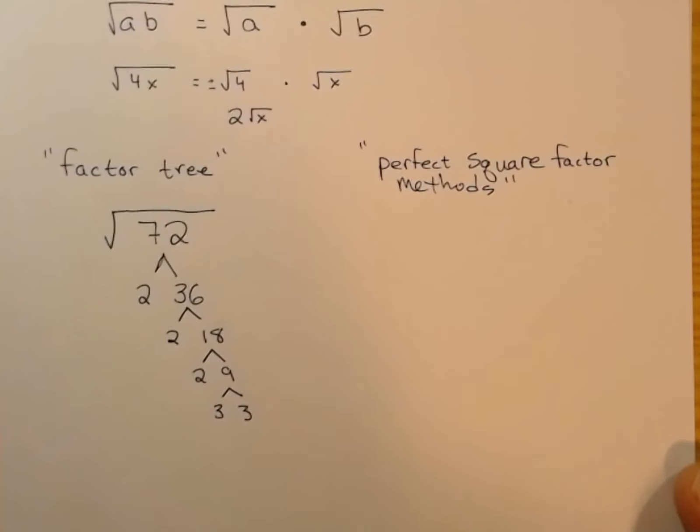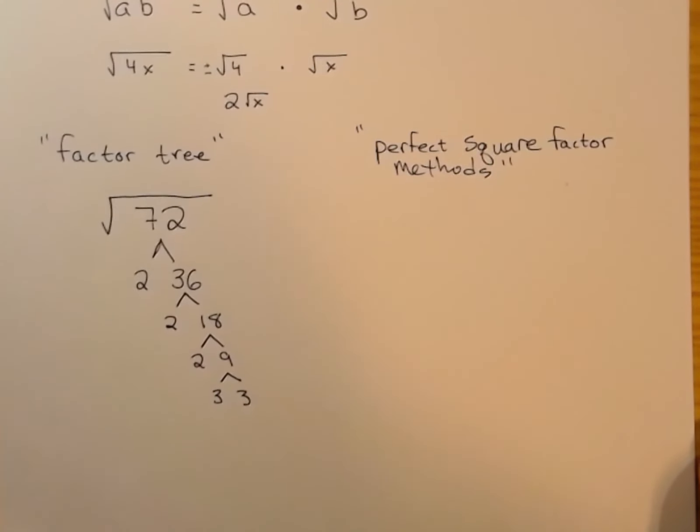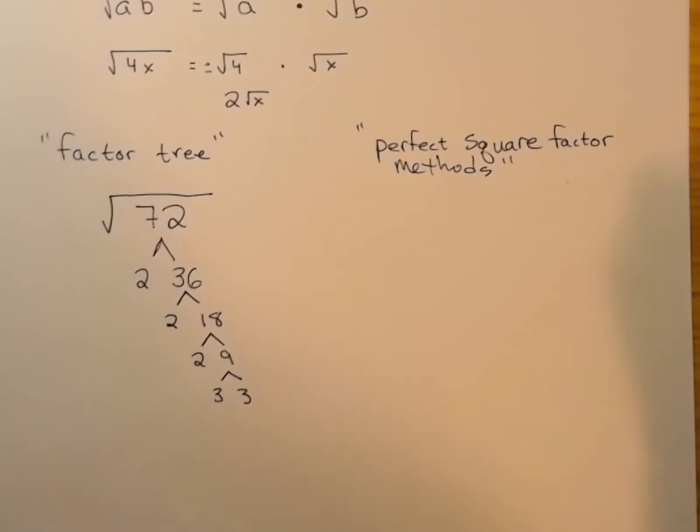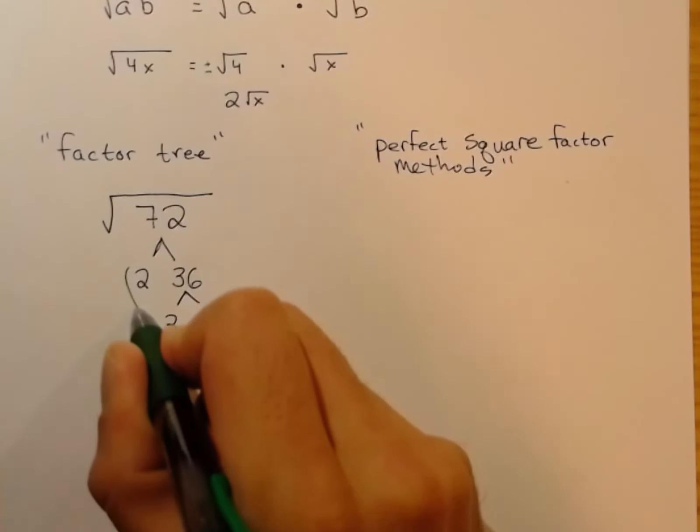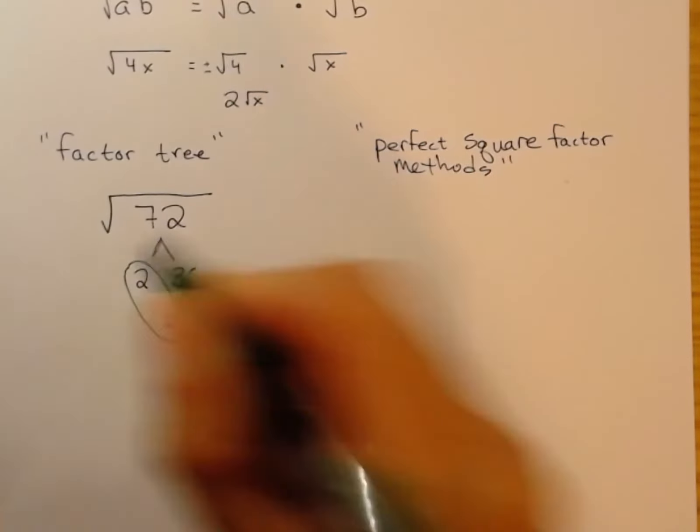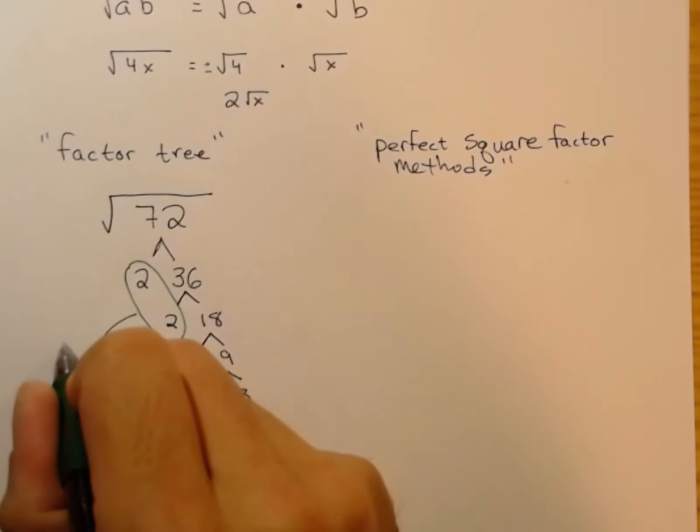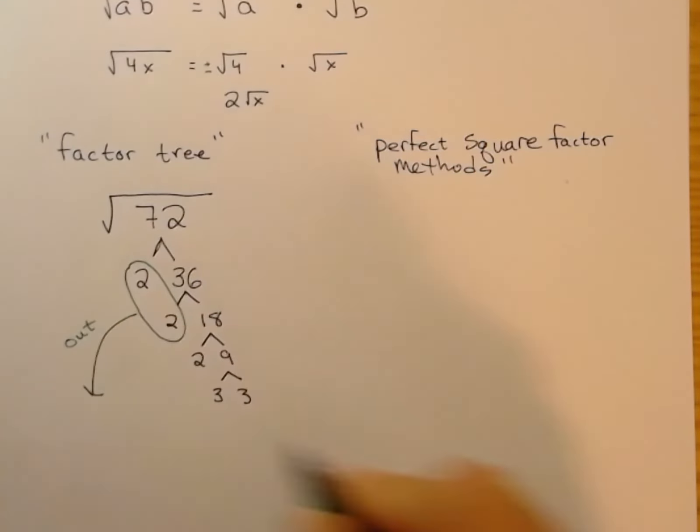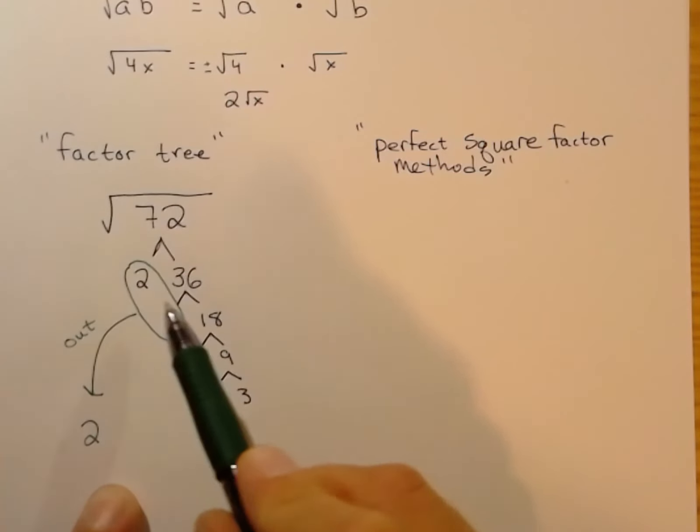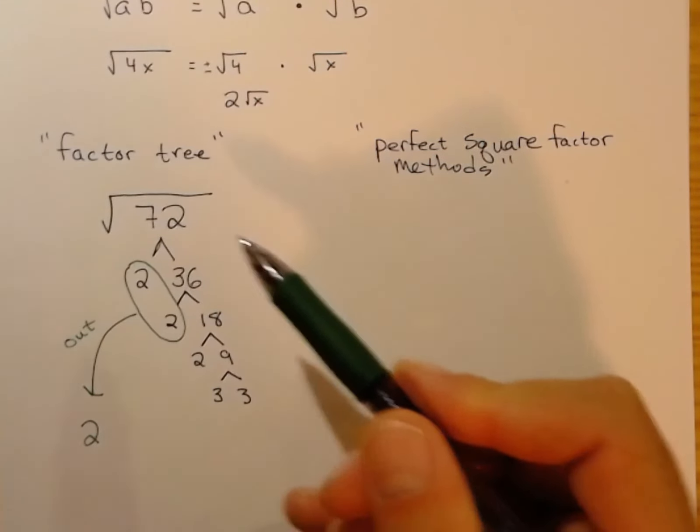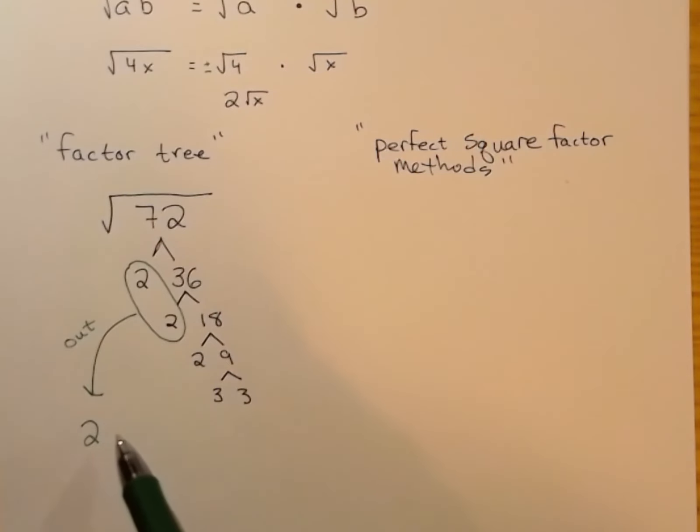9 is 3 times 3. So you break up the number under the radical into its prime number factors. Because the radical is essentially asking you what number times itself equals this number, when you have a pair of factors that are the same, those guys come out of the radical as a single factor.